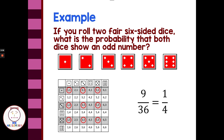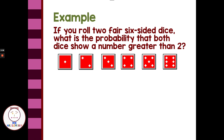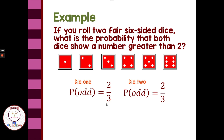Let's look at a new example. If you roll two fair six-sided dice, what is the probability that both dice show a number greater than two? The probability for die one: greater than two would be three, four, five, and six — four out of six, which is the same as two-thirds. We have the same probability for the second die: two-thirds, four out of every six. To find the probability of rolling both dice, we multiply our two probabilities together: two-thirds times two-thirds gives us four-ninths.